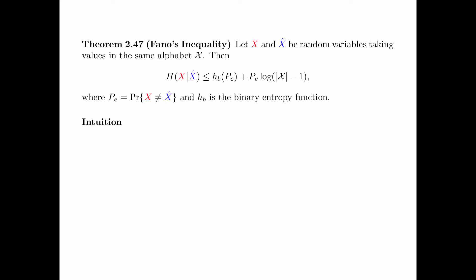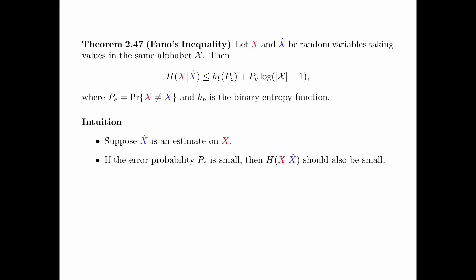Here is the intuition for Fano's Inequality. Suppose x-hat is an estimate of x. If the error probability P_e is small, then the conditional entropy of x given x-hat should also be small, because this conditional entropy measures the uncertainty about x when x-hat is given. This intuition is captured by Fano's Inequality because, for a fixed alphabet size, the logarithm is a constant, and for small P_e, H_B(P_e) is very close to 0, and P_e times the logarithm is also close to 0. Therefore, this upper bound is very small, and thus the entropy of x given x-hat is also very small.